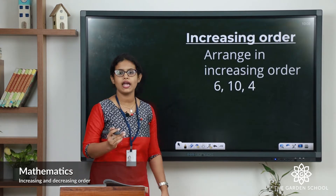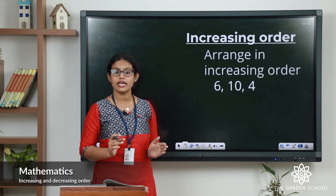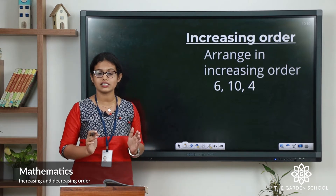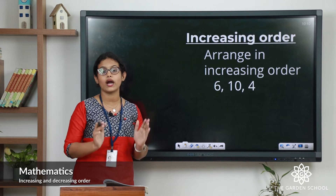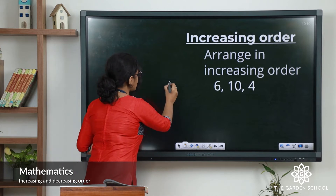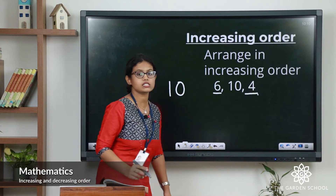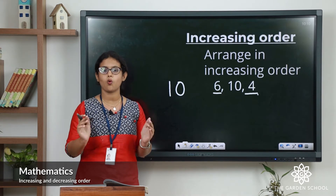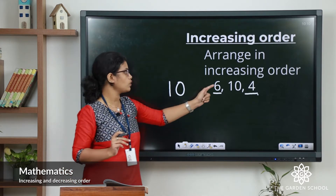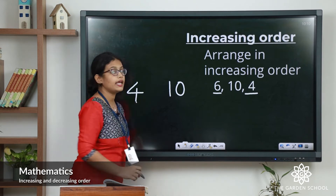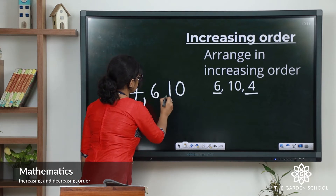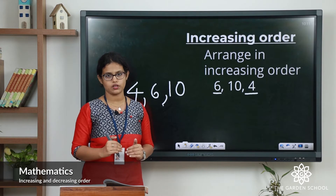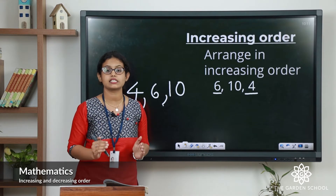Let's arrange the numbers in increasing order. Here you can see three numbers: six, ten, and four. Six and four are one-digit numbers, and ten is a two-digit number. We have learned that two-digit numbers are always larger than one-digit numbers, so ten is the largest. Now between six and four — counting from one: one, two, three, four — four comes first, then five, six. So the correct order is four, six, ten. Four is the smallest and ten is the largest. This is increasing order.